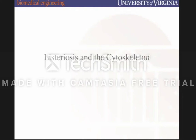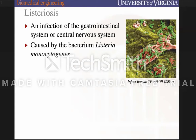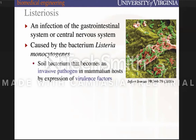Today we will be discussing the cytoskeleton. Up to this point, we've covered amino acids, membranes, and enzymes. We're going to be piecing a lot of that together today as we discuss the cytoskeleton and explore that through the context of listeriosis. Listeriosis is an infection of the GI tract or the CNS, and it is another bacterium found in the soil. It is an invasive pathogen, meaning it's incredibly aggressive or active in its infection.